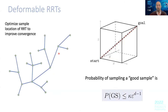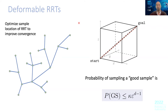One thing to mention is that the algorithm needs to sample smartly. It still doesn't scale extremely well in high-dimensional spaces. The reason is that the probability you're going to sample a good point in the graph decays exponentially with the dimensionality of the space. So as the space dimension increases, it's very unlikely that you'll sample a point that is useful for your solution.